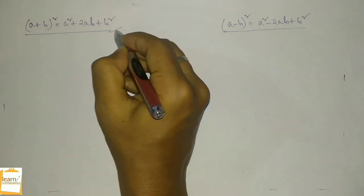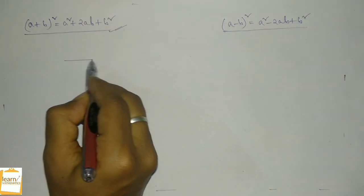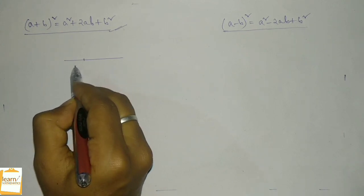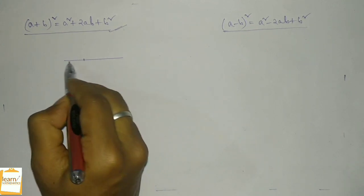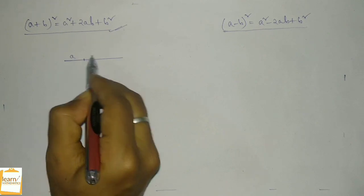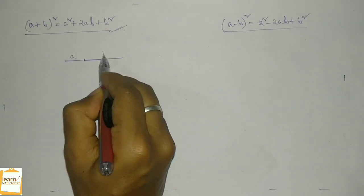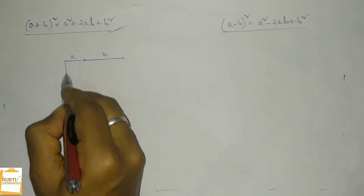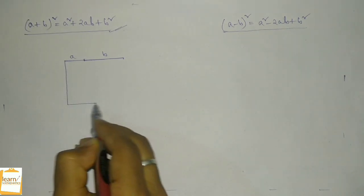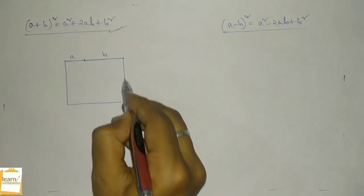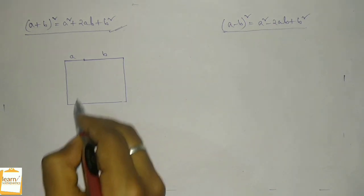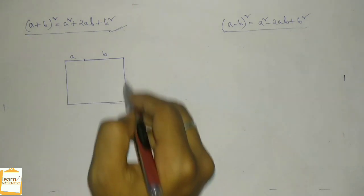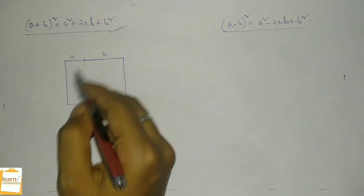Let me first discuss this formula. Consider a straight line and let us take a point here which divides this straight line — the length of this part is a and the length of this part is b. Now using this straight line let me draw a square, where these two lines are equal and these two lines are also equal.